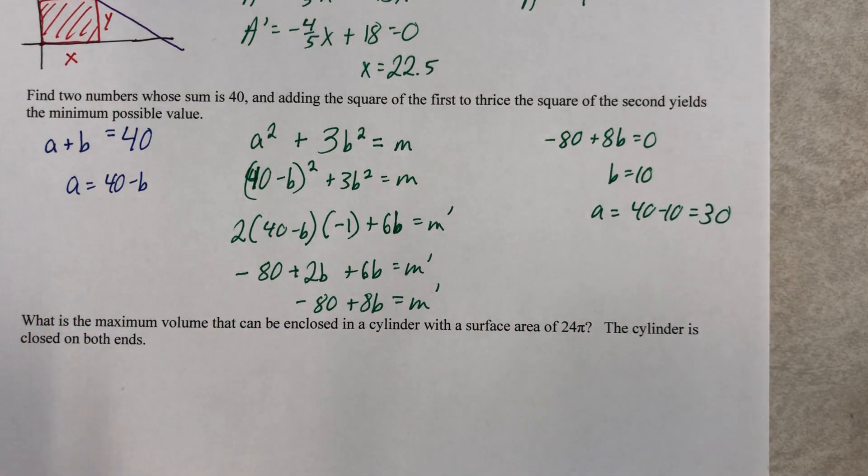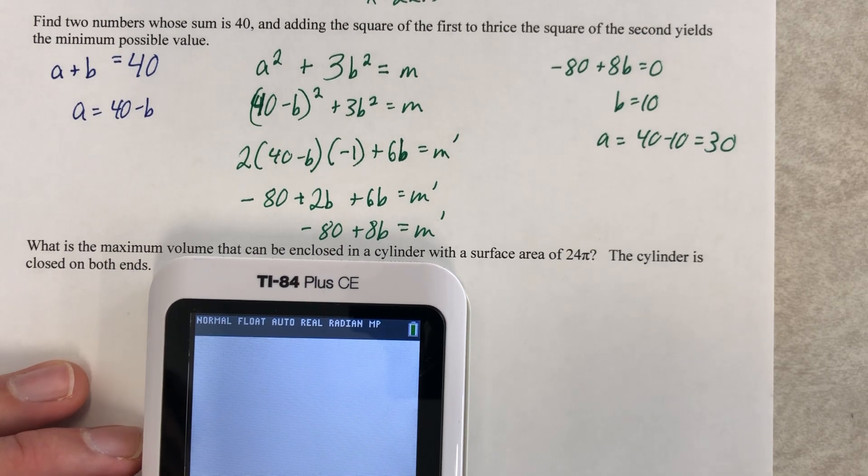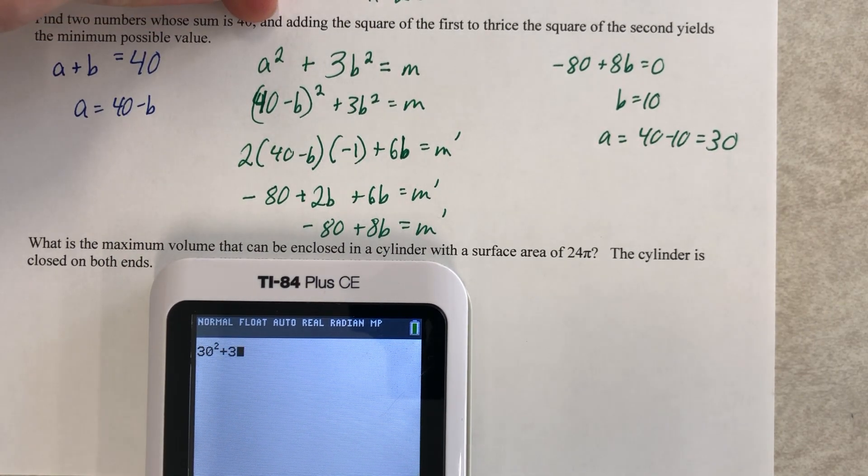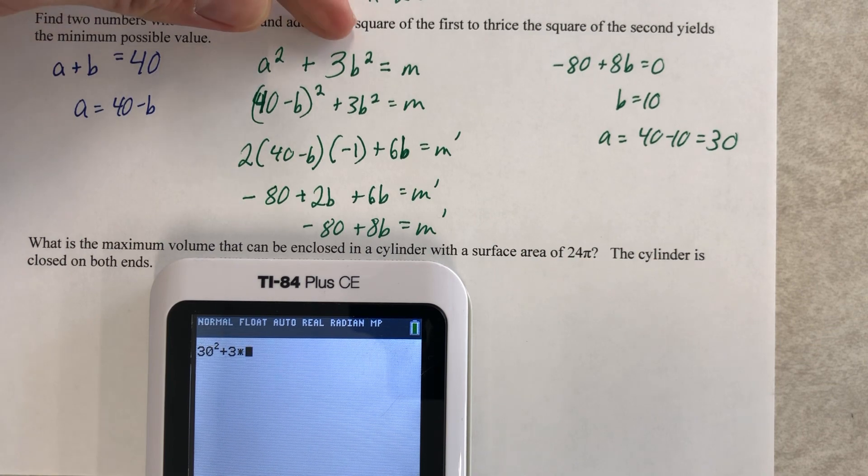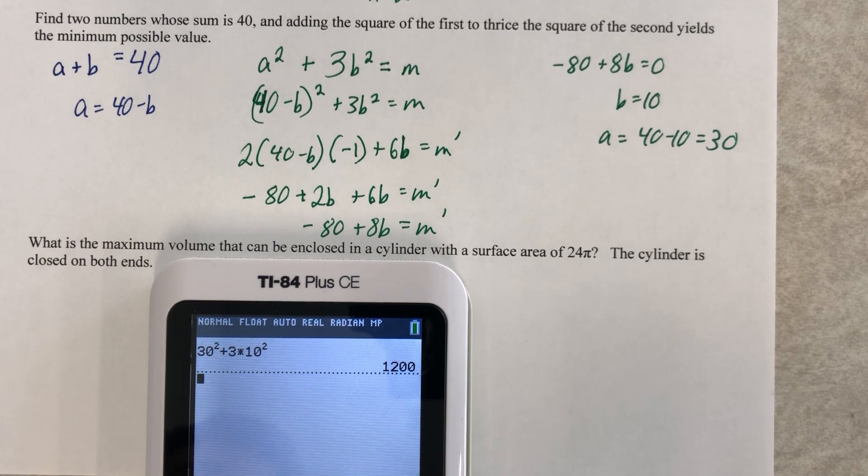Now, what is that minimum number? Don't know. Do you want to know? Sure, why not? Here it is, just in case you care. The minimum number would be 30 squared plus 3 times 10 squared, which is 1,200, and that is the lowest it'll get.